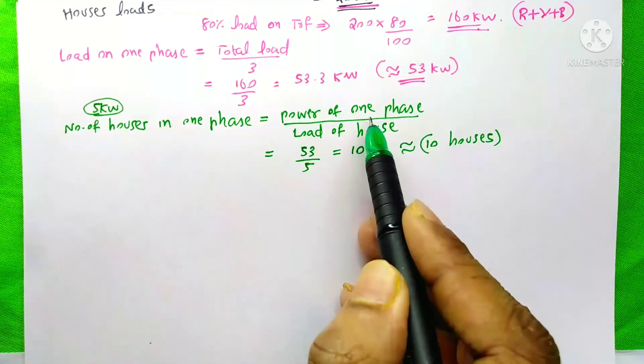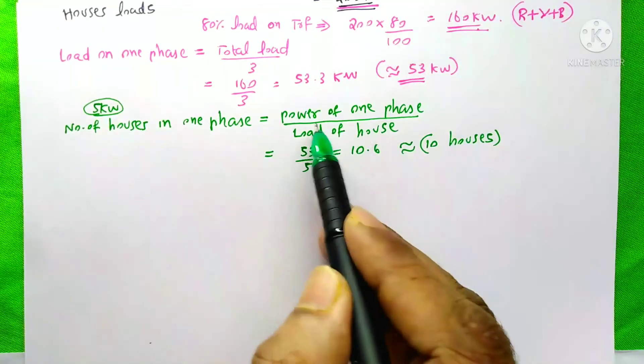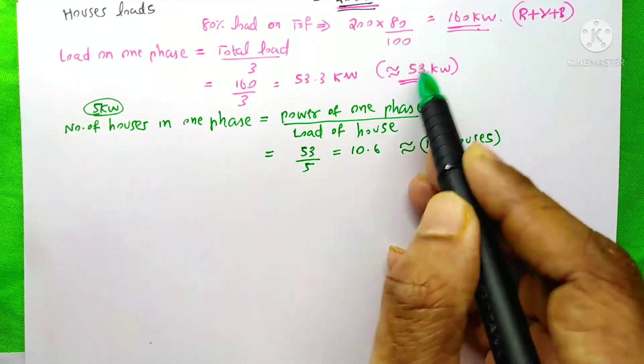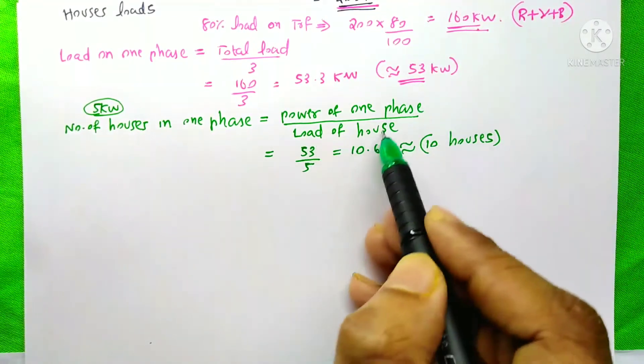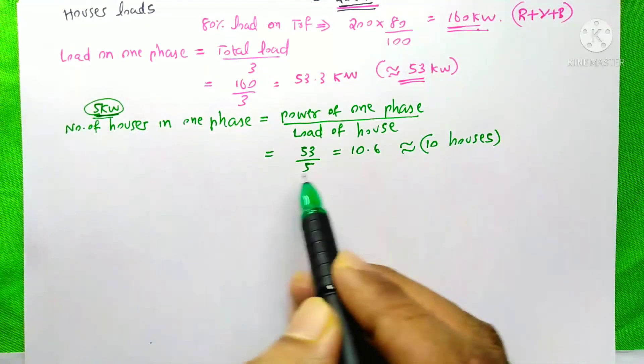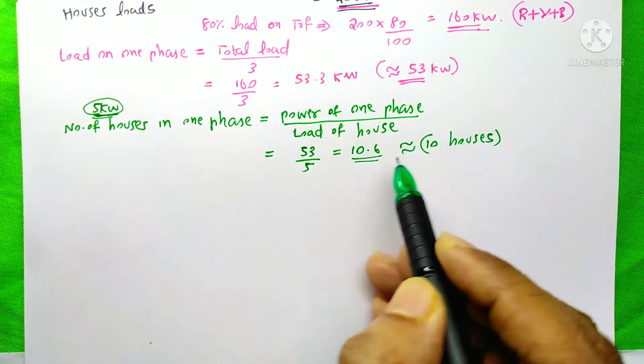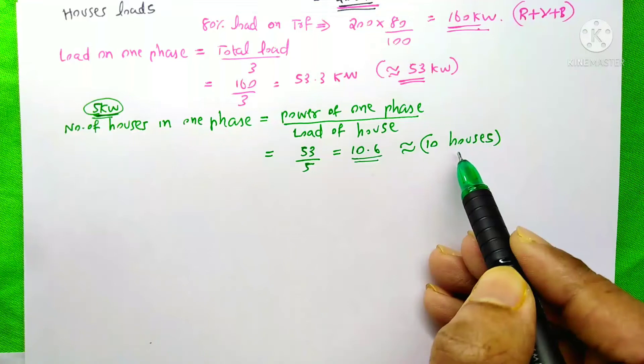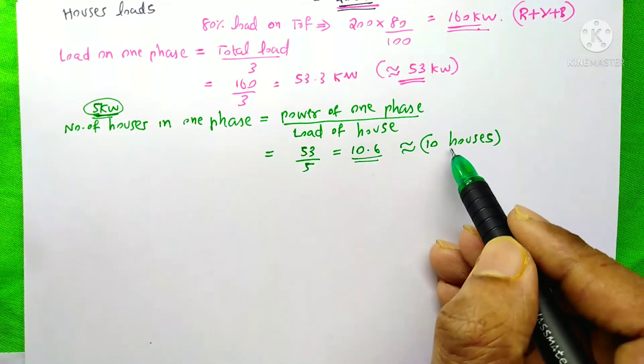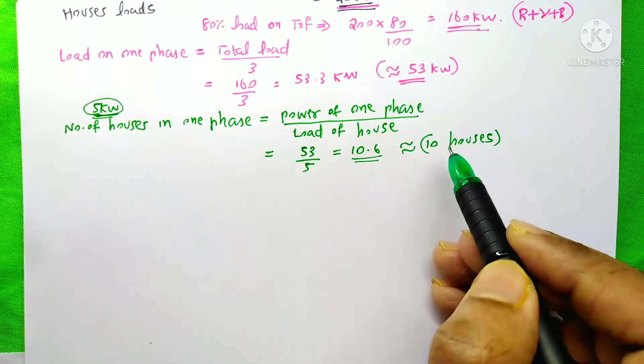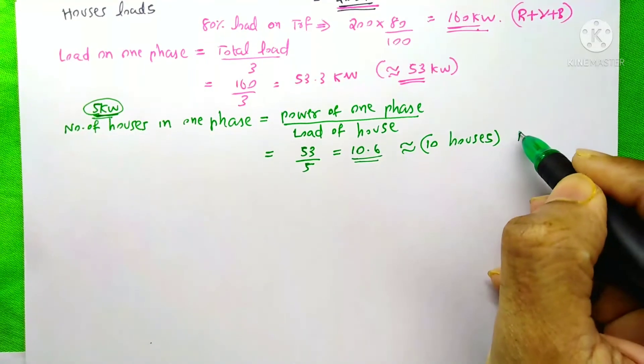The equation is power of one phase divided by load of house. The power of one phase is 53 kW divided by load of house which is 5 kW. So the answer is 10.6, approximately 10 houses. Which means we could connect 10 houses on one phase, suppose it is our R phase.